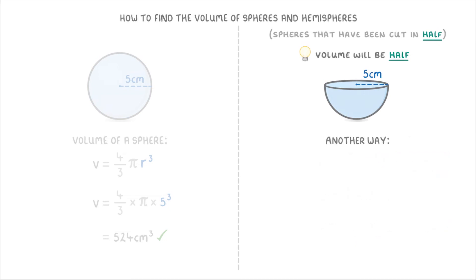Another way to work out the volume of a hemisphere is to use its own formula of volume equals 2 thirds pi r cubed. And you might notice that this is exactly the same as the volume for a sphere, except it has a 2 here instead of a 4.